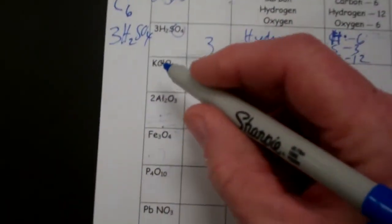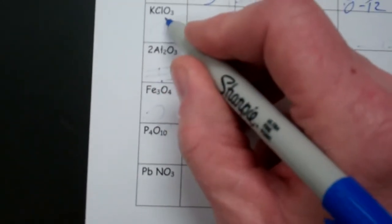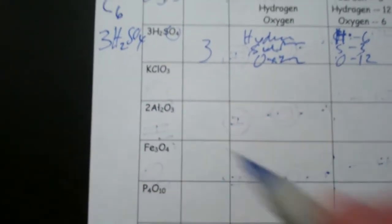So that's how we break down and understand a chemical formula. Remember, if there's no coefficient, you just have one molecule. If there's a coefficient like there with the 3, you have three of those molecules.